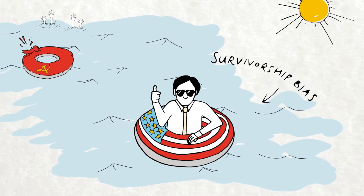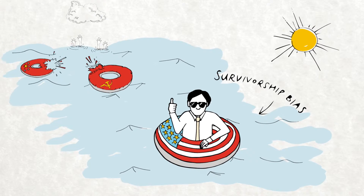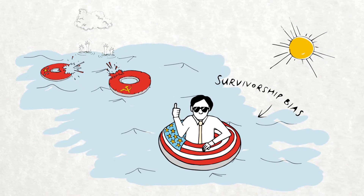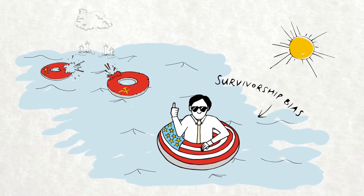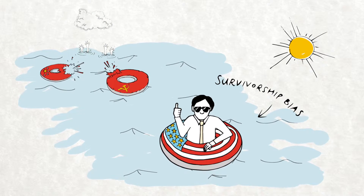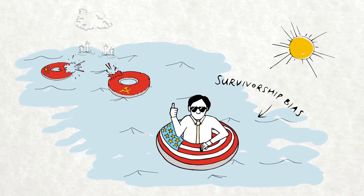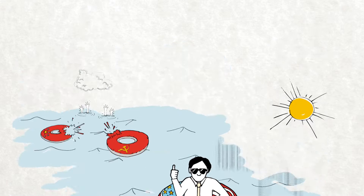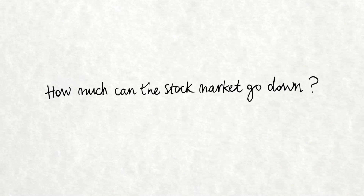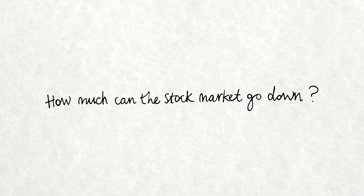We need to bear in mind that some markets didn't survive at all, such as those in Russia and China. What if we don't know much about history? From first principles, what can we say about how much the stock market can go down?